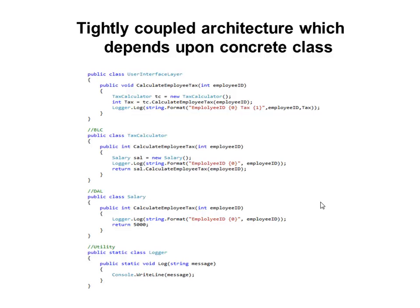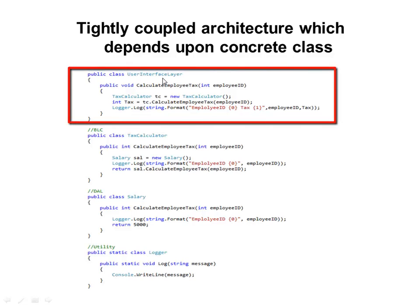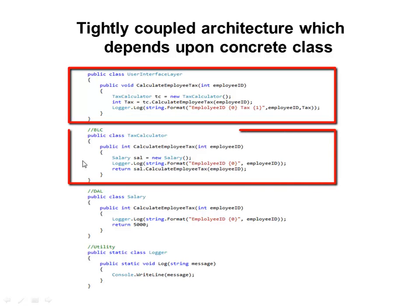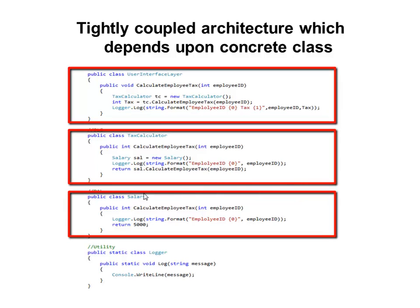Building a tightly coupled application makes it very difficult to test. An application should be built in such a way that each layer can be tested all by itself, even if subsequent layers are not available. In this example, a user interface class represents the UI layer, a TaxCalculator class represents the business logic component, and Salary represents a data access class. There is also a utility (logger) class shared among different classes. In this architecture, the user interface layer is directly dependent upon the business logic component layer, which is directly dependent on the data access layer, and all three layers are directly dependent on the utility logger class.